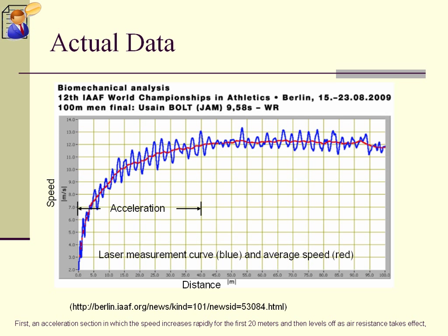First, an acceleration section in which the speed increases rapidly for the first 20 meters and then levels off as air resistance takes effect. And second, a constant speed section, in which Usain's propulsive force is just balanced by the air resistance.